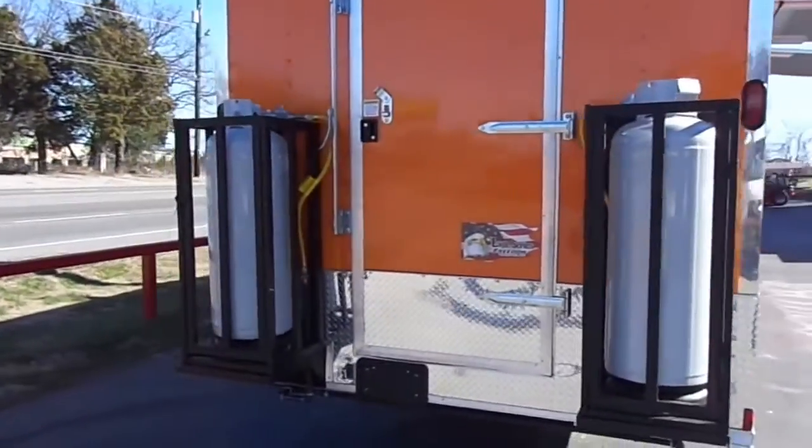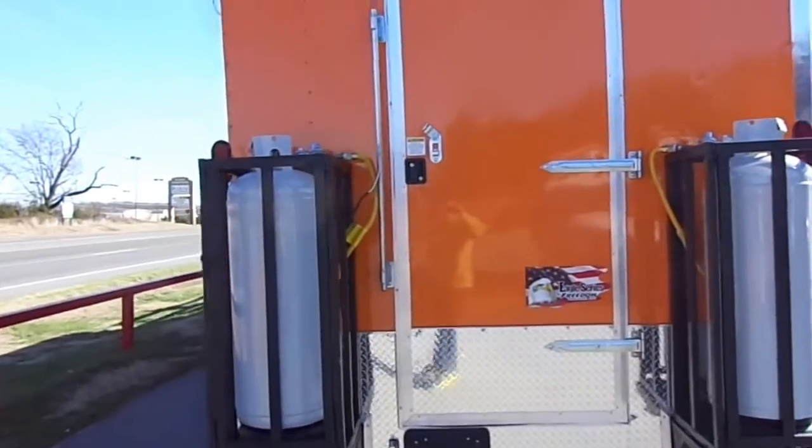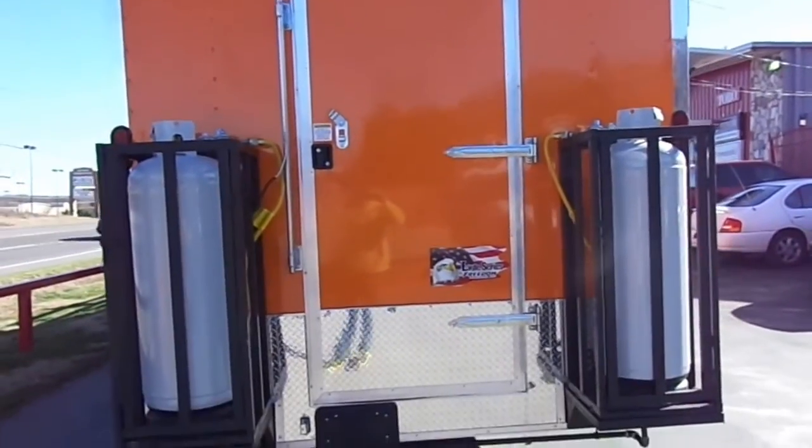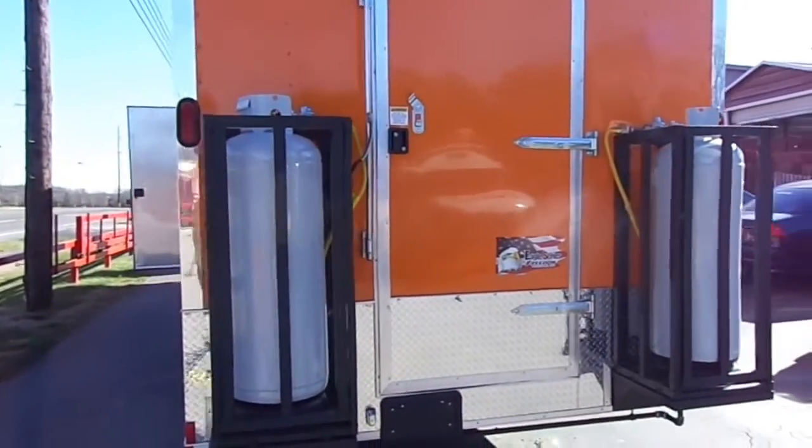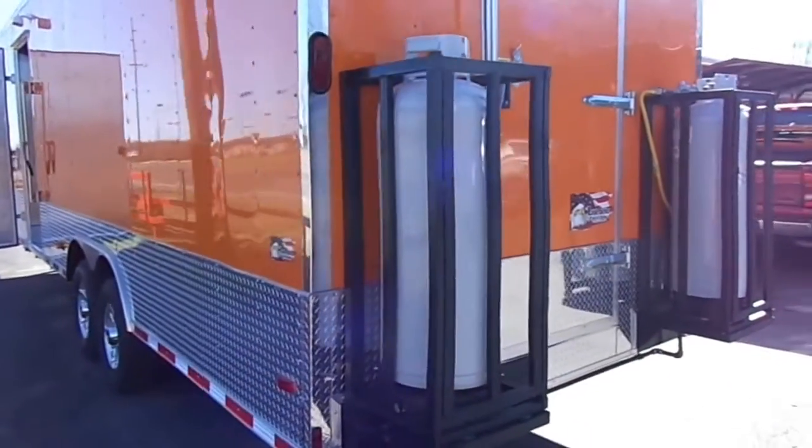This trailer has a 36-inch rear entry door and 100-pound propane cages. This trailer comes with a gas package with two tanks.